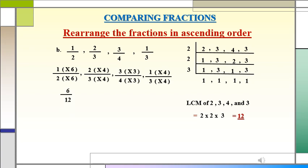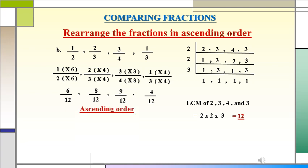Now we have got the equivalent fractions. The first equivalent fraction: 6 times 1 is 6, so 6/12. 2 times 4 is equal to 8, so 8/12. 3 times 3 is 9, so 9/12. And the last one, 1 times 4 is 4, hence 4/12. Now we have got all the fractions with the denominator 12, so we can easily compare and arrange them in ascending order.